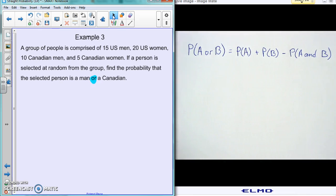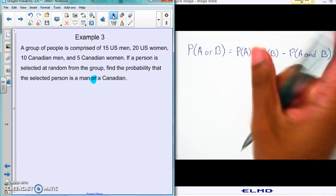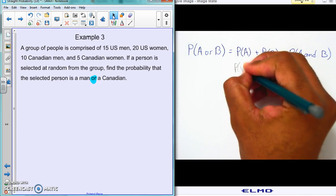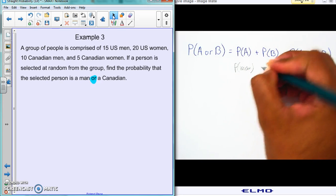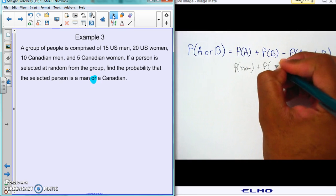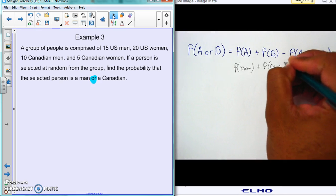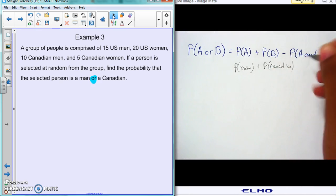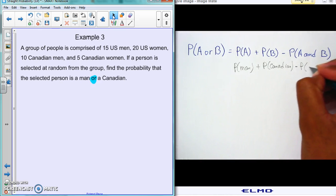Before we do anything here, we have to kind of figure out what's going on with all the stuff. And again, we're talking about the probability of being a man, plus the probability of being a Canadian, and then the probability of being both a man and Canadian.